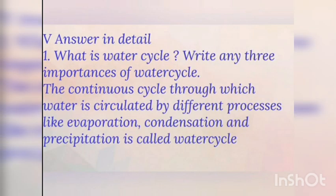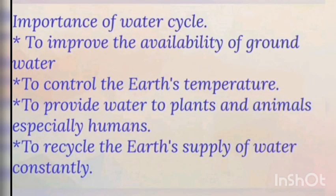Answer in detail. First one: what is the water cycle? Write any three importance of the water cycle. The continuous cycle through which water is circulated by different processes like evaporation, condensation, and precipitation is called the water cycle. The importance of the water cycle: to improve the availability of groundwater level, to control the Earth's temperature, to provide water to plants and animals especially humans, and to recycle the Earth's supply of water constantly.